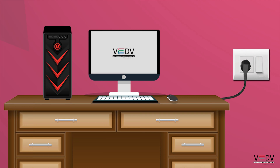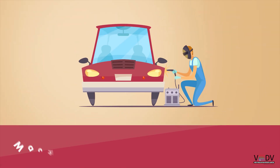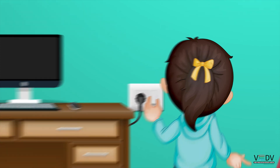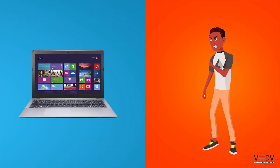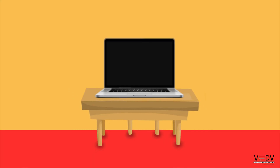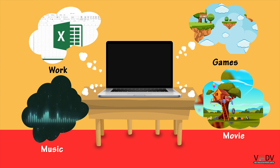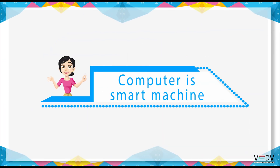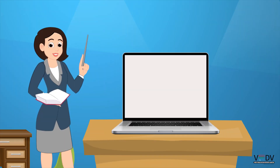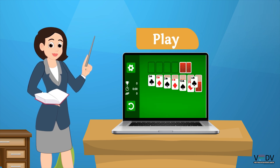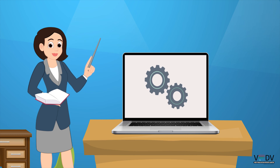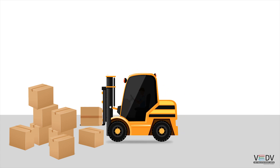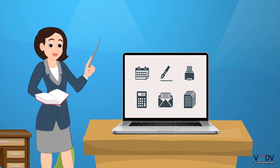Computer is an electronic device or machine. It is a human-made machine that runs on electricity. Computer never gets tired or angry. Computer stores many things. Computer saves money and time. It is a wonderful machine that allows us to work and play. It can do several things very fast. Most machines can do only one thing at a time.